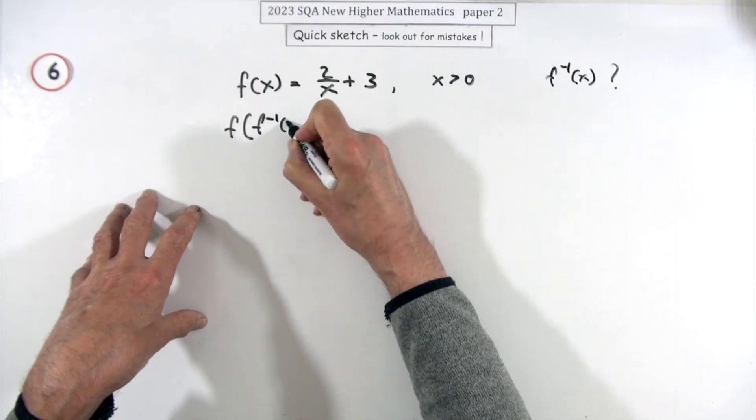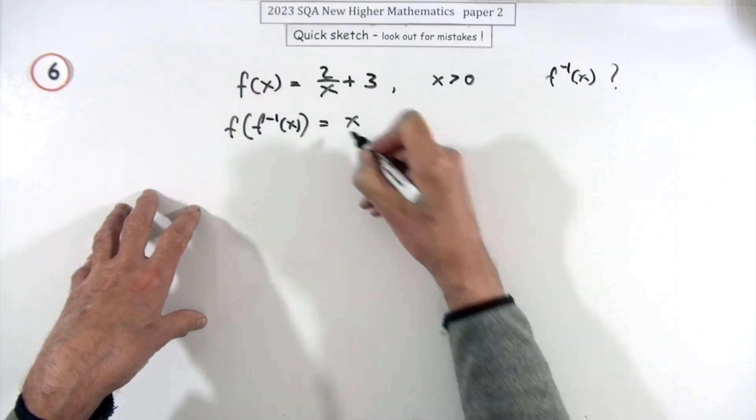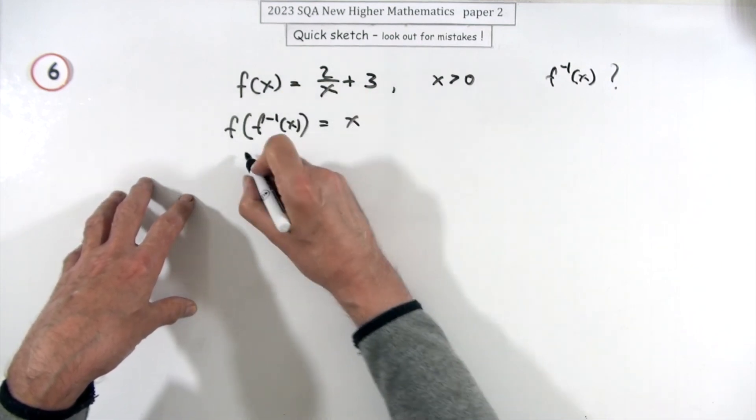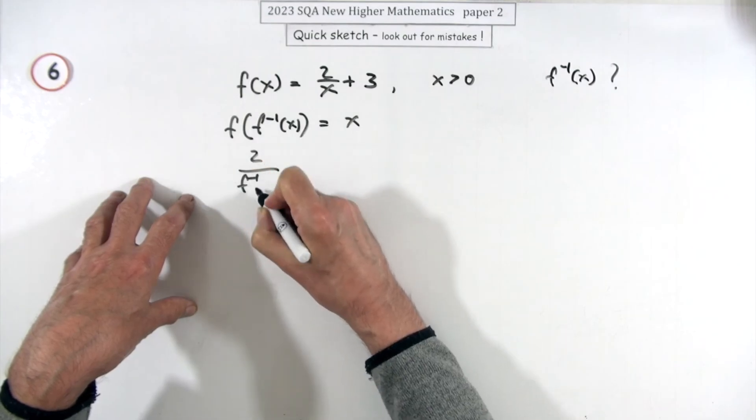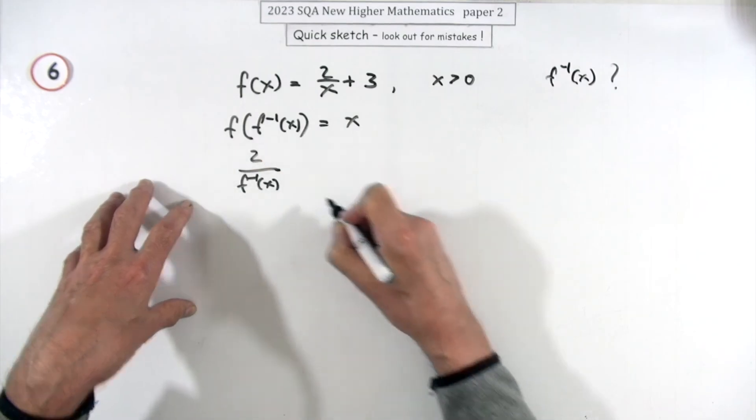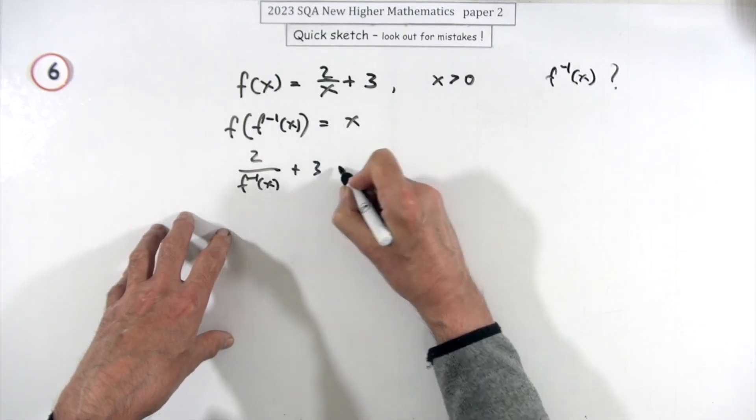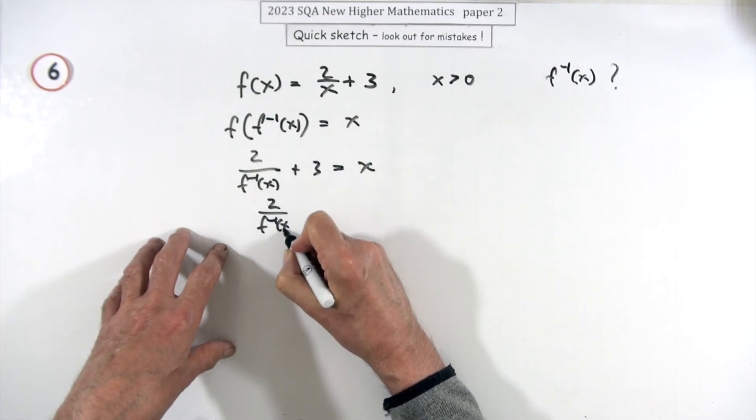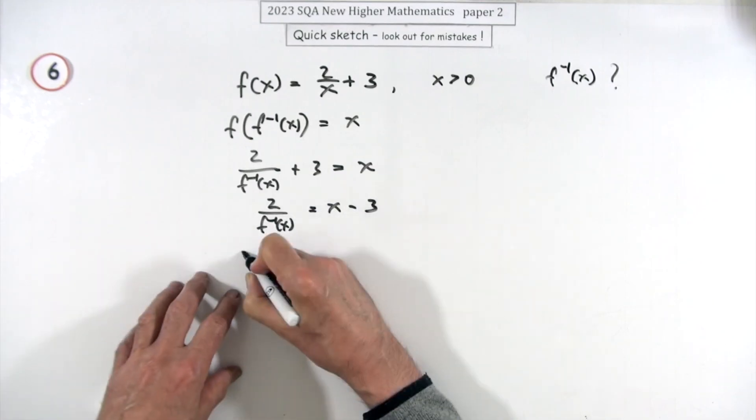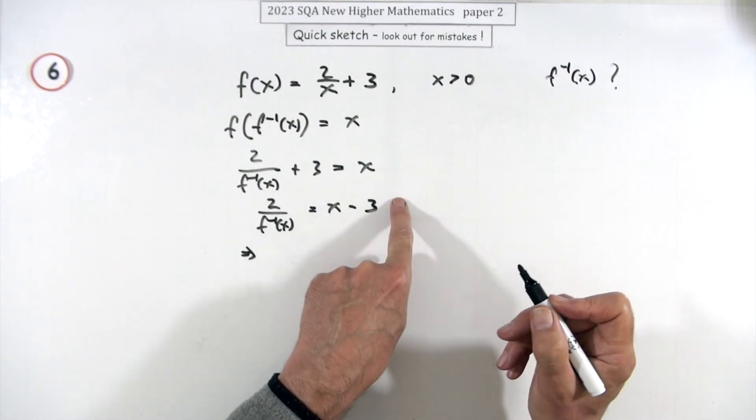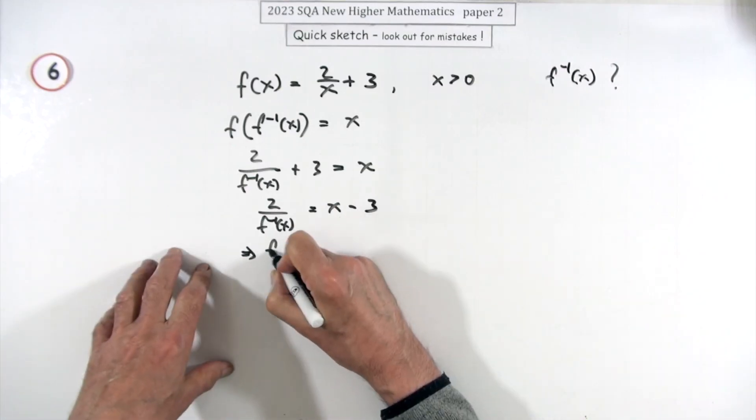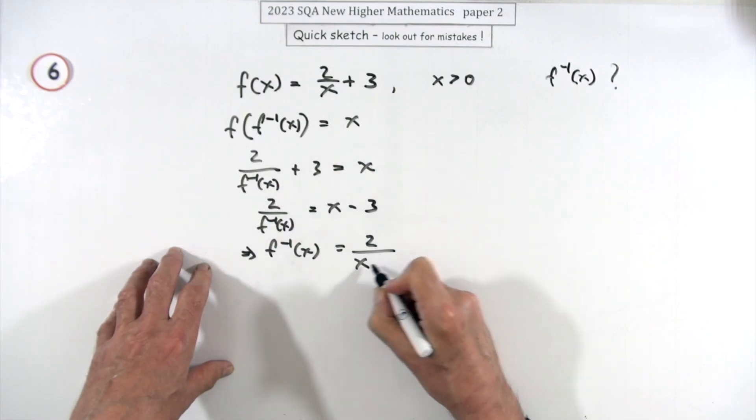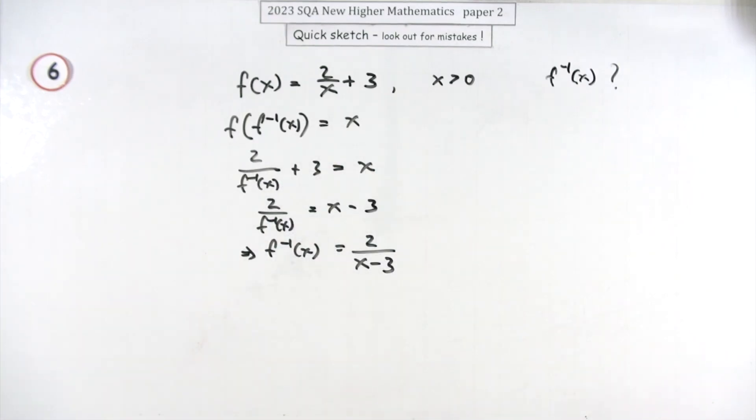The function acting on its inverse should produce x. So what does the function do? The function takes 2 over f⁻¹(x) plus 3 should be x. So 2 over the inverse should be x minus 3. And then I'll just switch that - can go to the top. I'm just going to cross multiply, that'll go to the bottom. So the inverse function will be 2 over (x - 3).